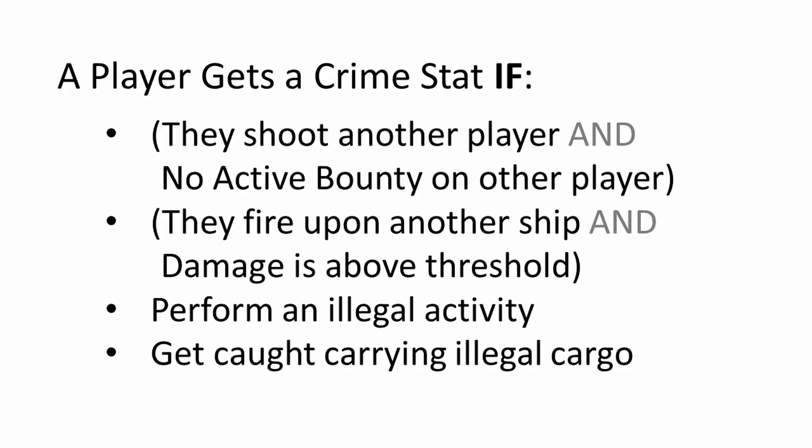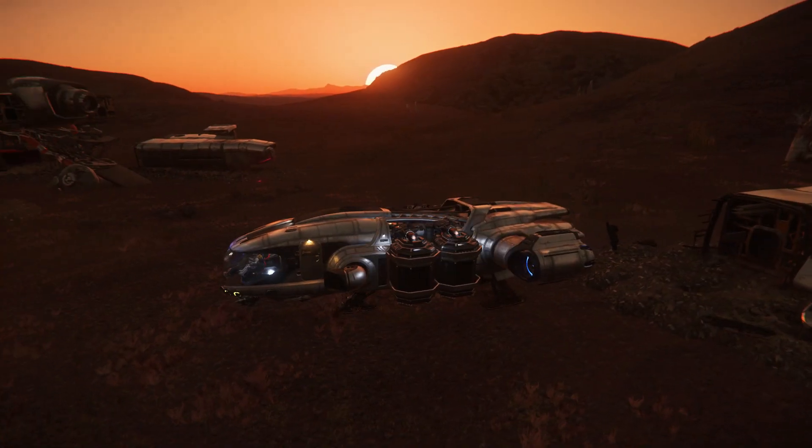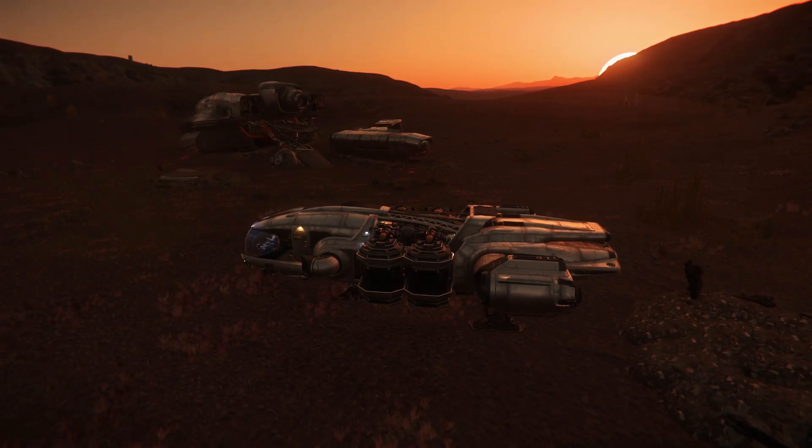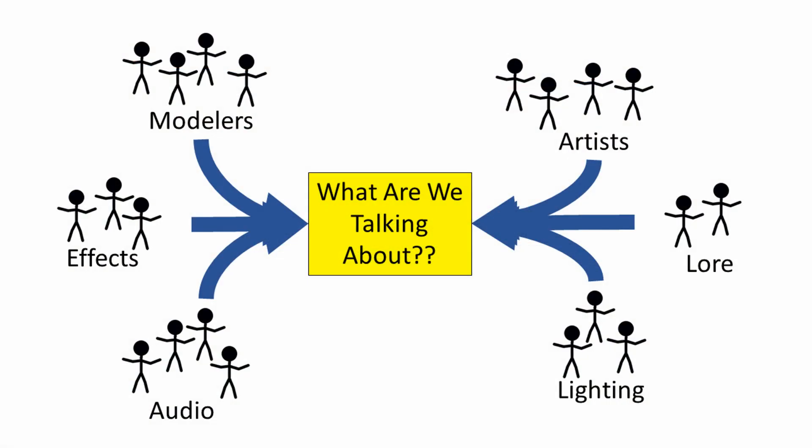So they might modify the rule so the game will take into consideration the amount of damage done before applying a crime stat. I'm of course making up these rules and probably simplifying this logic, but you get the idea. This communication aspect is particularly important across a large organization like CIG with many sets of teams and different kinds of skills. They don't all have to be skilled in bricklaying to help build the wall.